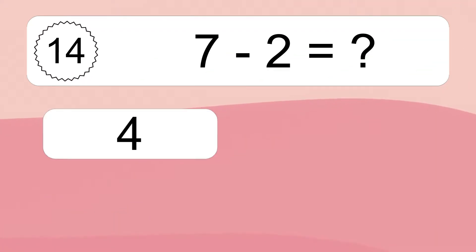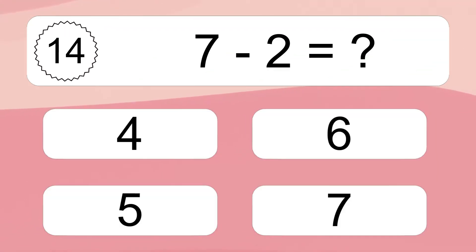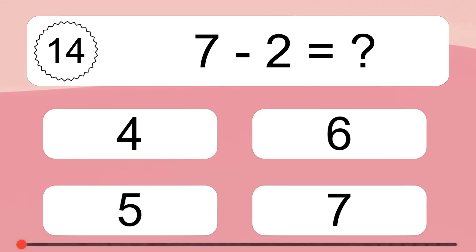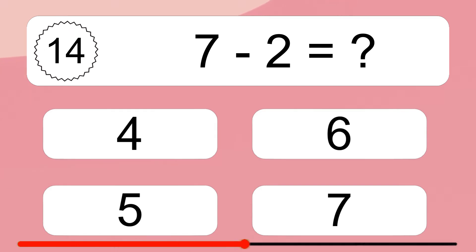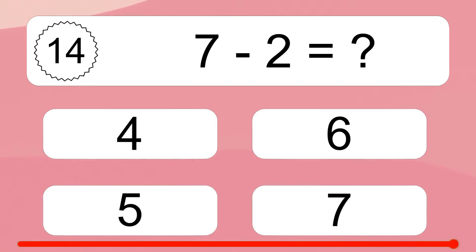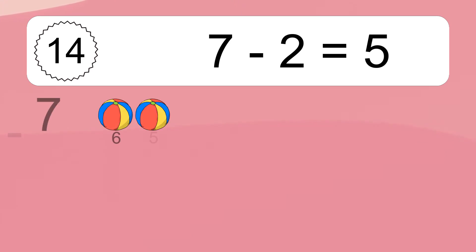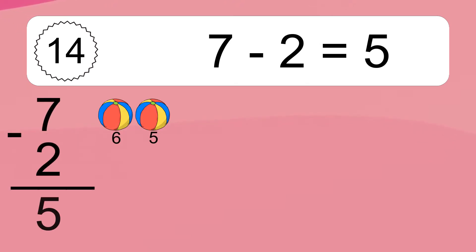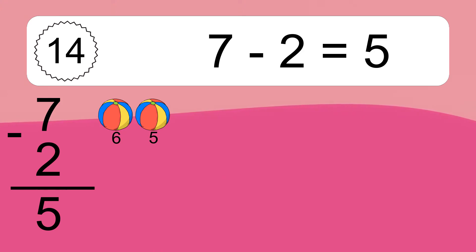7 minus 2 equals what? 7 minus 2 equals 5. Let's count it! 6, 5.